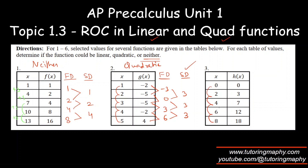For the next table, x is increasing from 0 to 2, 2 to 4, 4 to 6, 6 to 8 — same increase. The first differences are: 3 minus 0 = 3, 7 minus 3 = 4, 12 minus 7 = 5, 18 minus 12 = 6 — not equal. The second difference: 4 minus 3 = 1, 5 minus 4 = 1, 6 minus 5 = 1. Second difference is constant, so this is also a quadratic function.